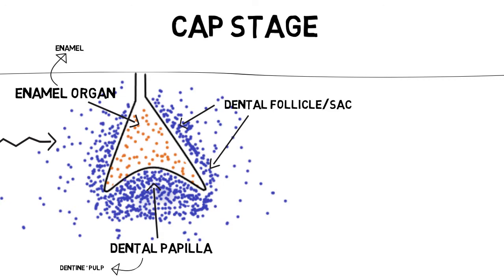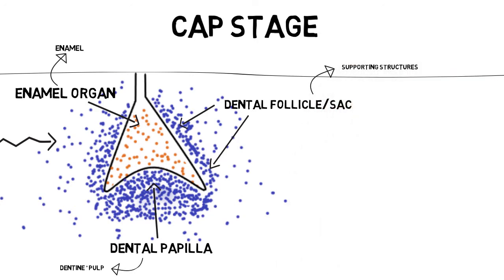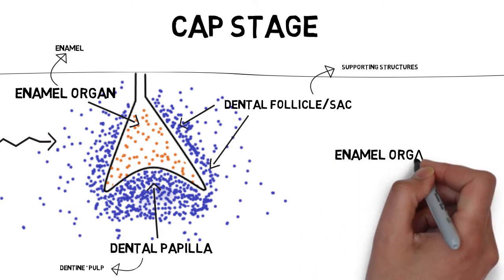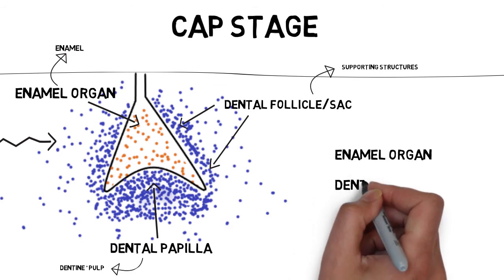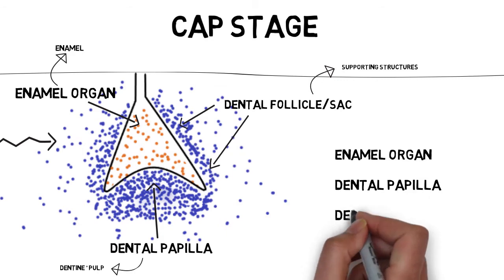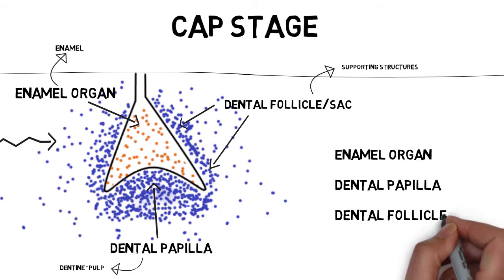The dental follicle will eventually give rise to the supporting structures of your tooth, like the periodontium. These dental follicular cells are ectomesenchyme cells just like the dental papilla, but they surround the entire enamel organ, while the cells under the enamel organ are the dental papilla. So we have three different groups of cells: the enamel organ, which gives rise to enamel; the dental papilla, which gives rise to dentine and pulp; and the dental follicle, which gives rise to the supporting structures.